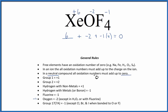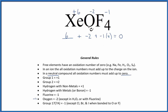To recap, we found the oxidation numbers for the elements that we knew, and we used those — and the fact that in a neutral compound all the numbers add up to zero — to find the one that we didn't know: the xenon in XeOF4. This is Dr. B, and thanks for watching.